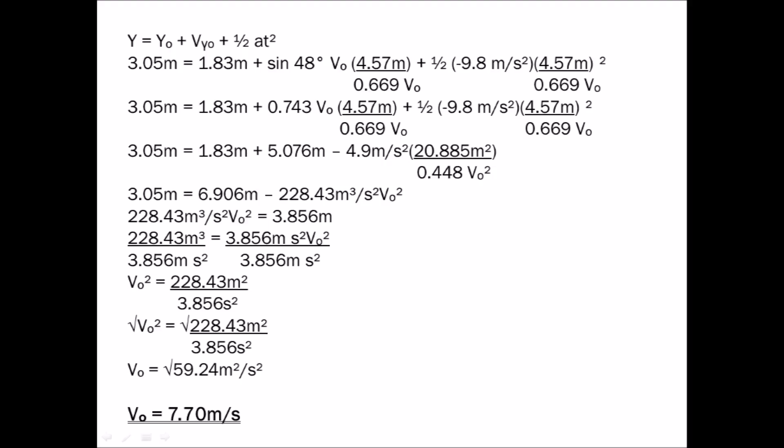Now let's input all the values into the vertical equation: y equals y₀ plus v₀ᵧ times t plus one-half at². We have 3.05 meters equals 1.83 meters plus sine 48 degrees (0.743) times v₀ times (4.57 divided by 0.669 v₀) plus one-half times negative 9.8 meters per second squared times (4.57 divided by 0.669 v₀) squared.